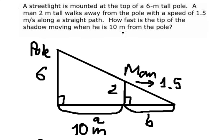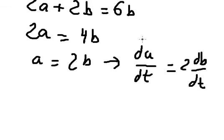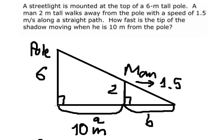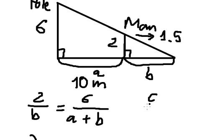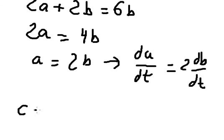We notice the question asks how fast the tip of the shadow is moving. So let's call this distance from here to here C. So we have C equals a plus b.